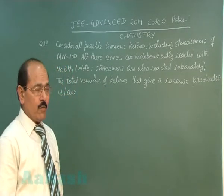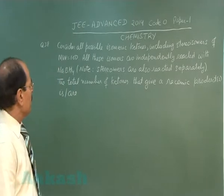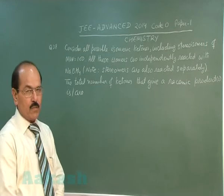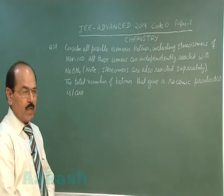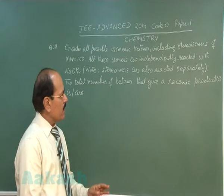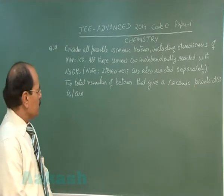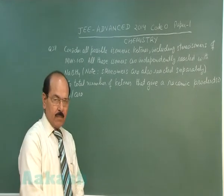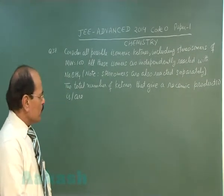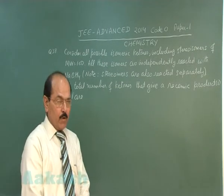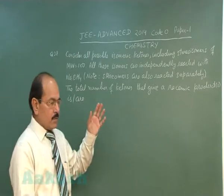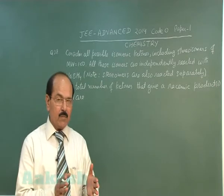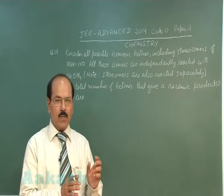Question 38 of the paper reads: consider all possible isomeric ketones, including stereoisomers, of molecular weight 100. All these isomers are independently reacted with sodium borohydride. Stereoisomers are also reacted separately. The total number of ketones that give a racemic product — these are ketones having molecular weight 100, or 6-carbon atom ketones with the carbonyl functional group.